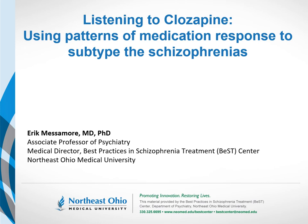Today we're going to explore some of the evidence that suggests that schizophrenia is not a single unitary disease state. Rather, we're going to explore evidence that suggests that what we call schizophrenia, without an S, is actually comprised of several distinct underlying diseases that have similar enough behavioral symptoms that they go by the same name.